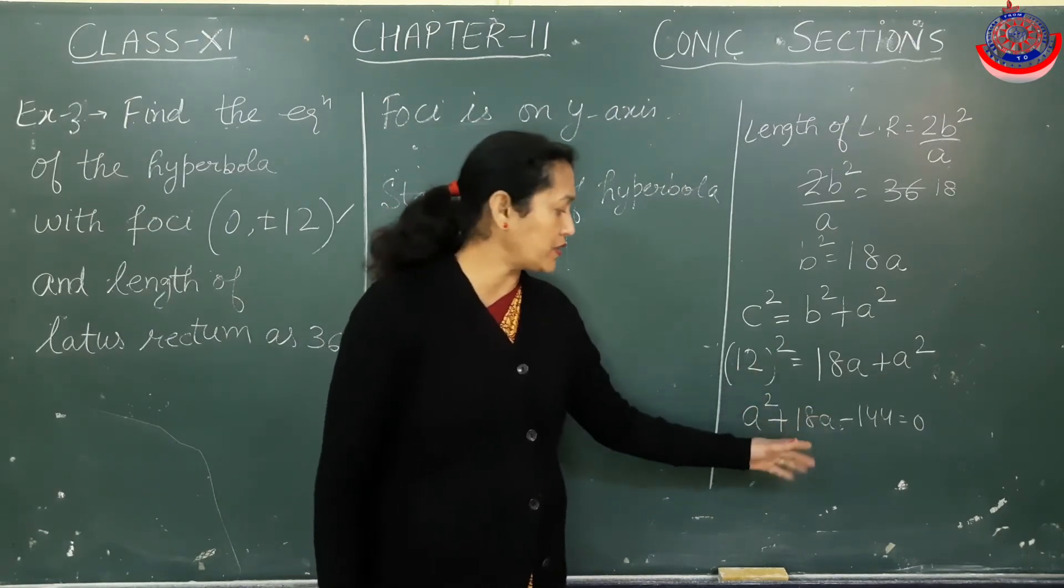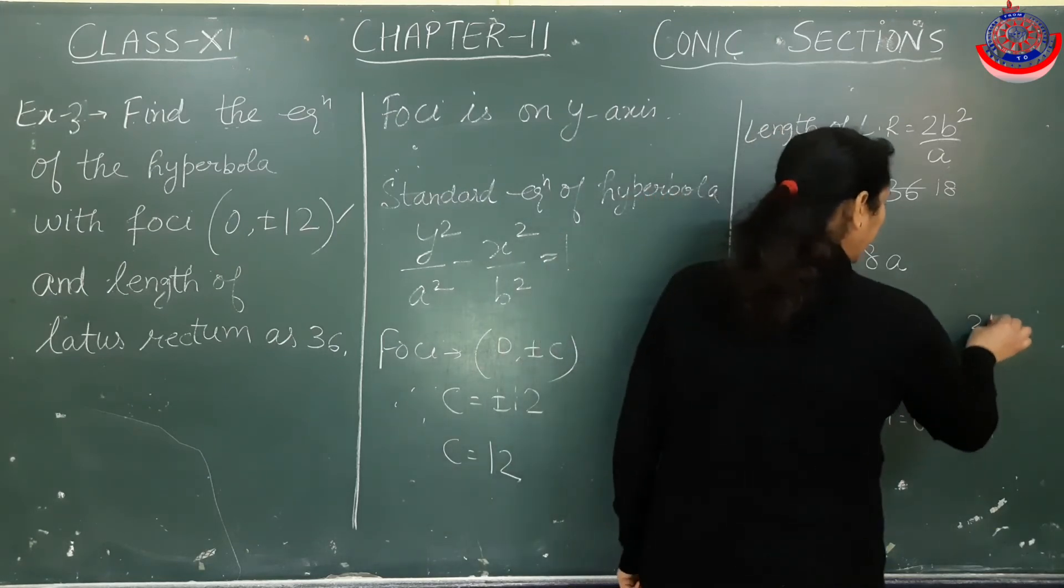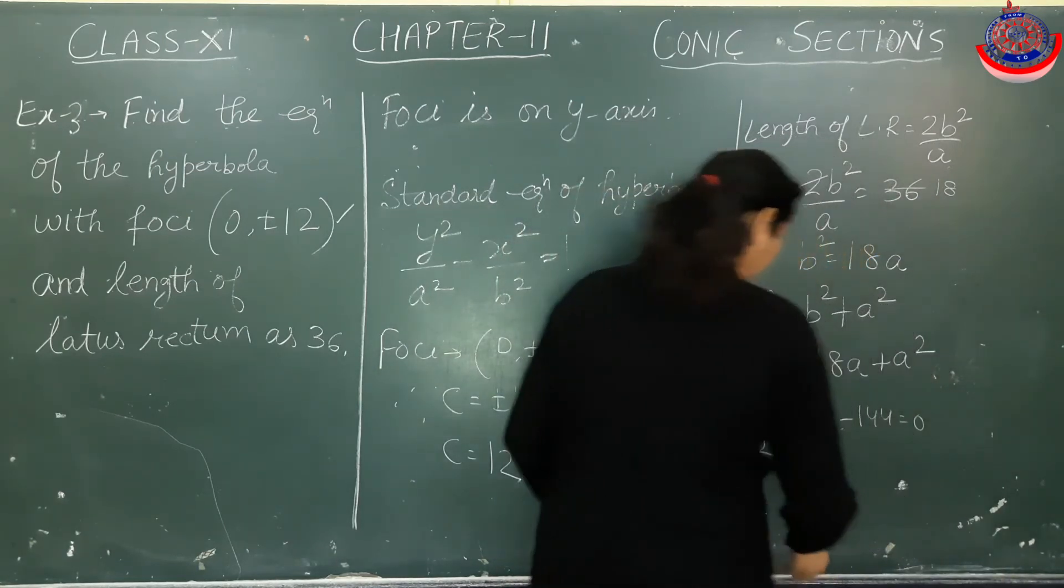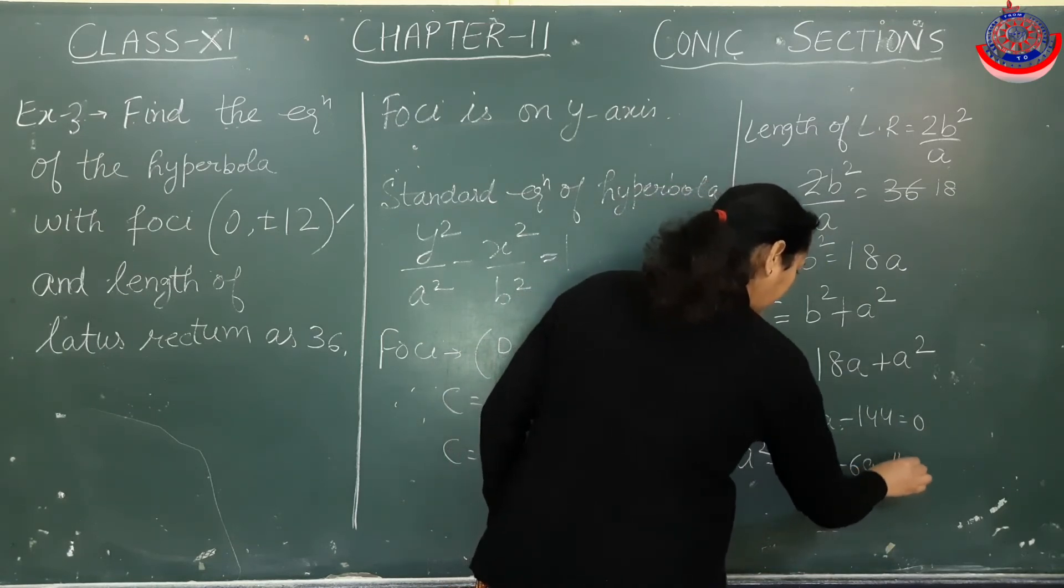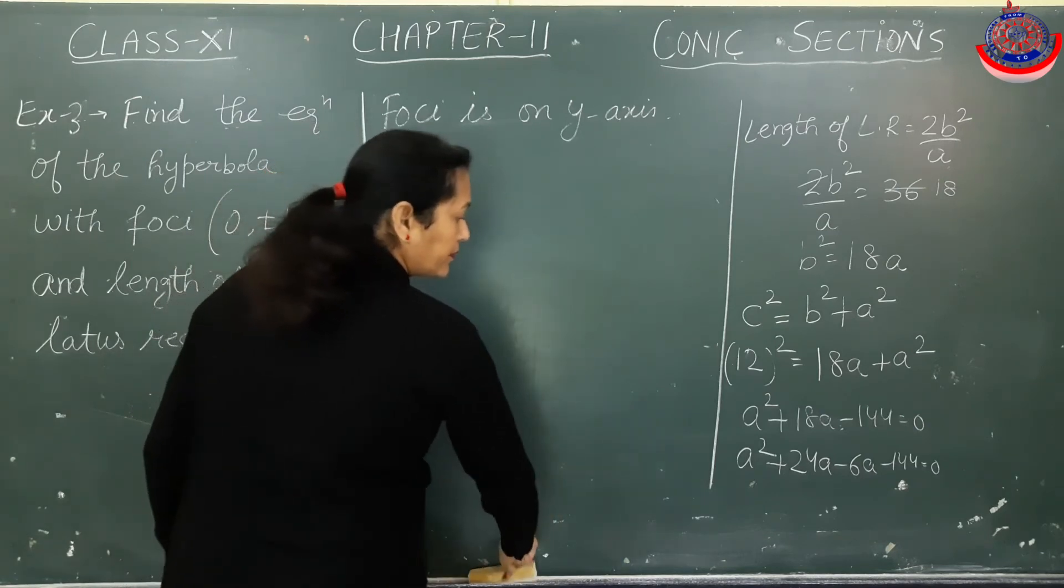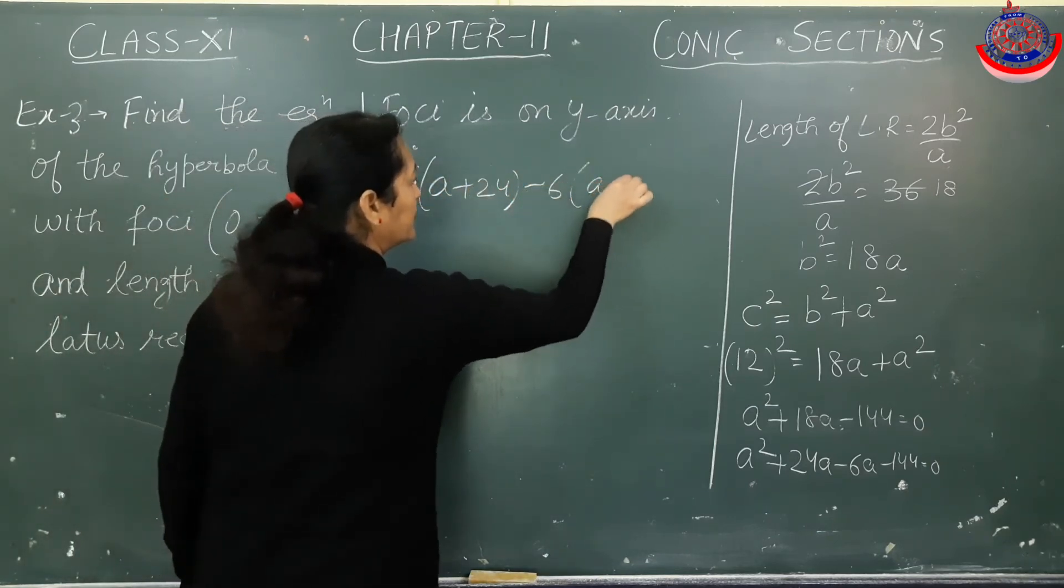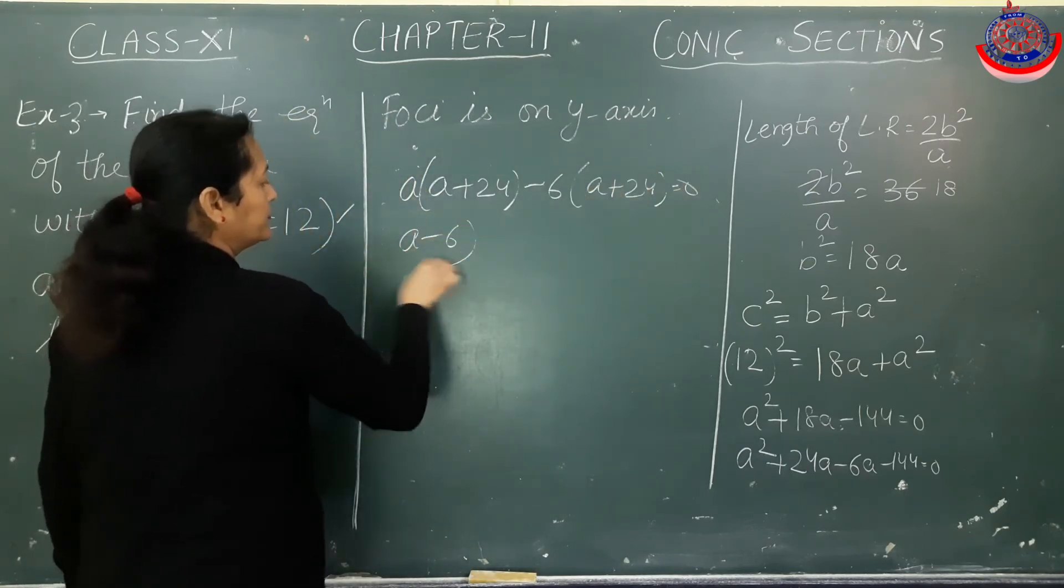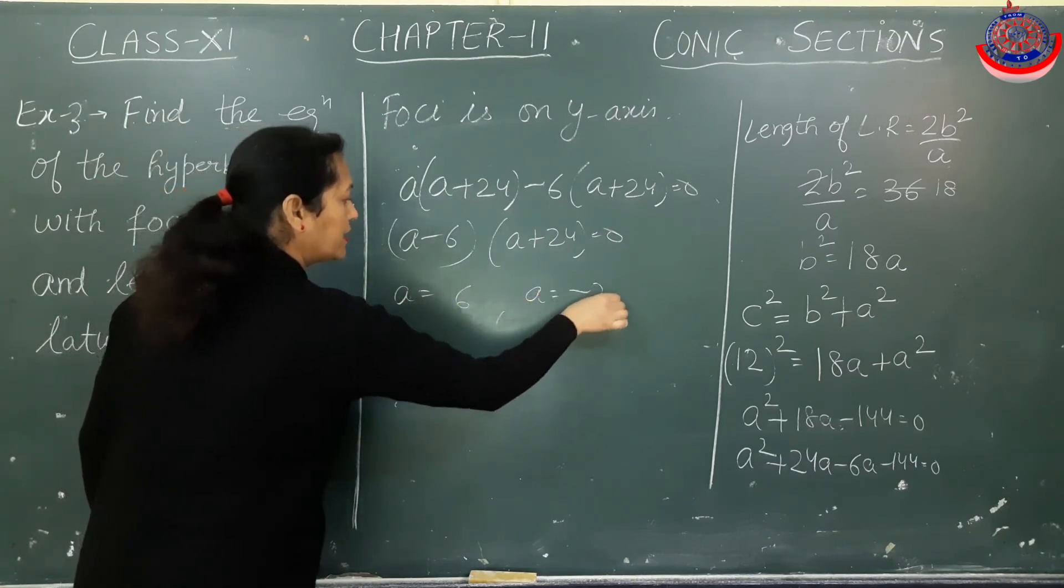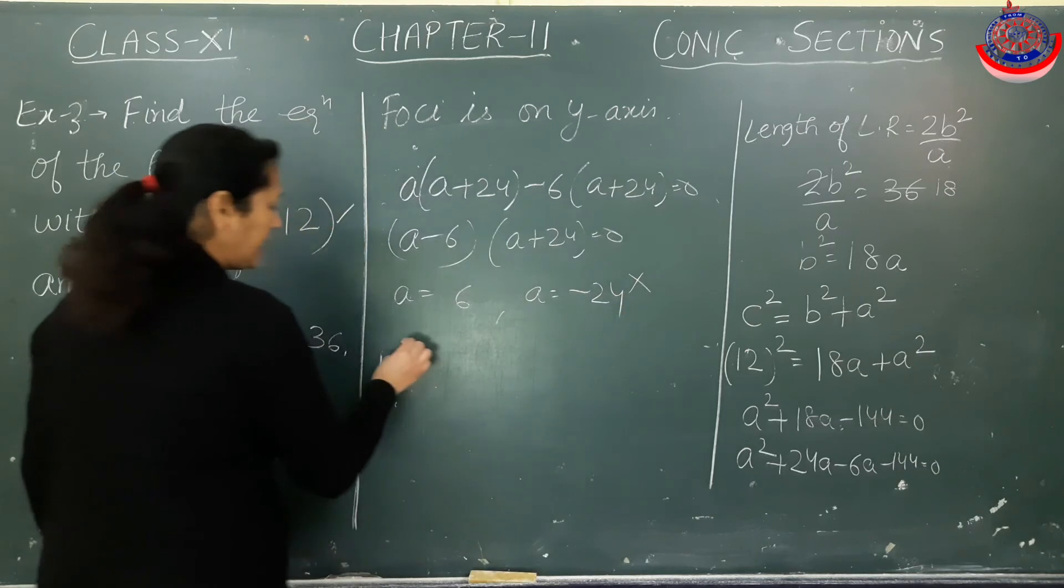Using middle term split or quadratic formula to get value of a. For 18a, we use 24 and 6: 24 and 6 give sum as 18. So a² + 24a - 6a - 144 = 0. We get a(a + 24) - 6(a + 24) = 0, so (a + 24)(a - 6) = 0. We have two values of a: a = 6 and a = -24. We won't take a = -24, a can't be negative. Rejecting this value, a = 6.